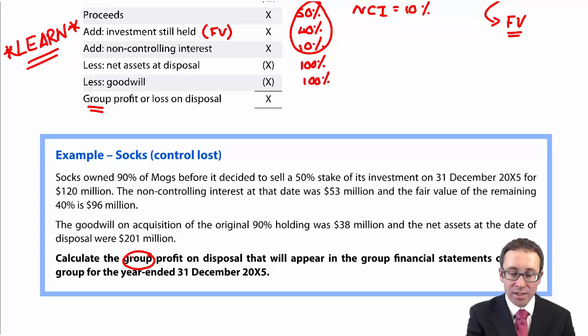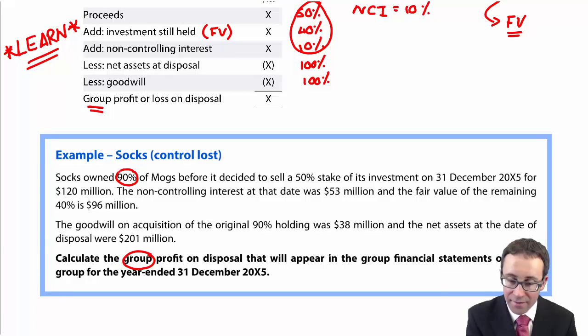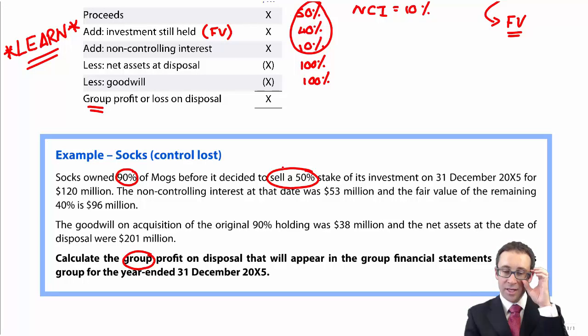It wants us to calculate the group profit on disposal for the year ended December 20x5. SOX owned 90% of MOGS before it decided to sell a 50% ownership stake on 31st of December X5 for 120 million. We're told the non-controlling interest, the fair value of the remaining 40% is at 96, the goodwill on acquisition was 38 and the net assets were at 201.